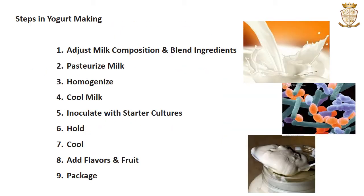Coming to the steps in yogurt making, there are generally nine steps involved. First is adjusting the milk composition and blending of ingredients. Second is pasteurization of the milk. Third is homogenization. Fourth is cooling of the milk. After cooling, the starter culture is inoculated. It will be held for a period of time. Then it will be cooled down. The flavors and fruits will be added. And finally, the preparation will be packaged.